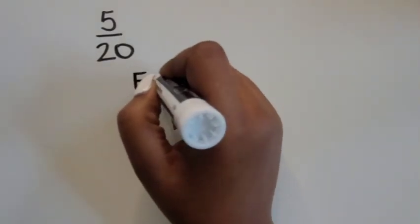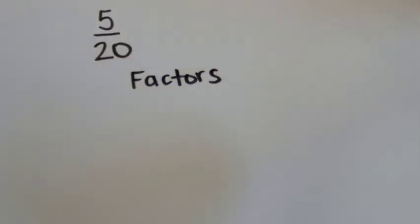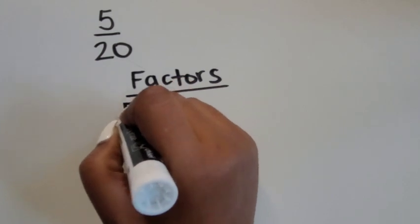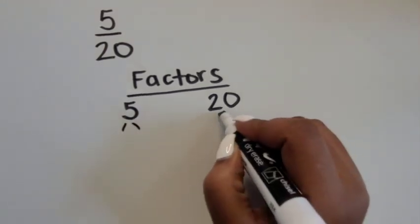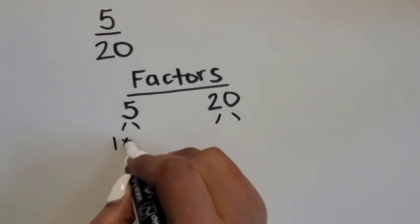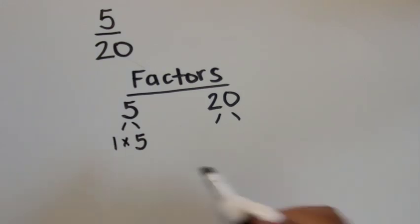Let's repeat those steps to find a simplified fraction for 5 twentieths. Let's list out the factors for the number 5 and the number 20 again by creating a factor tree for both.